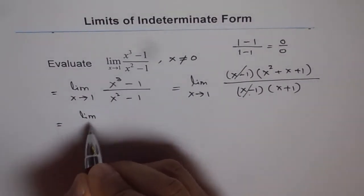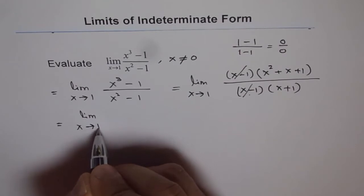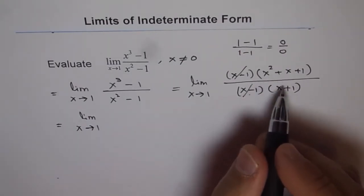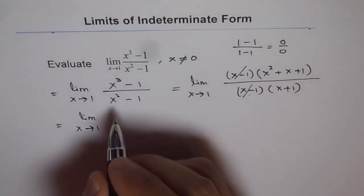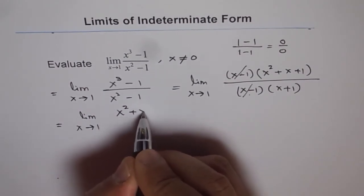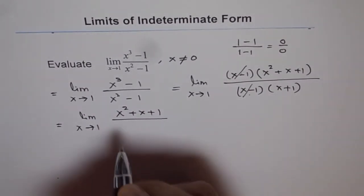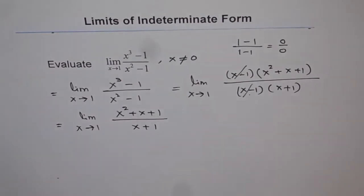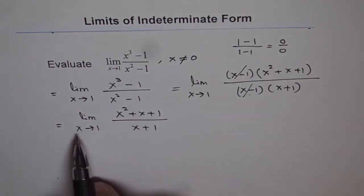And thereby, we can simplify our expression. So this rational expression now gets simplified and can be written as x square plus x plus 1 over x plus 1. Now here, we can substitute the value of 1 and find the limit.